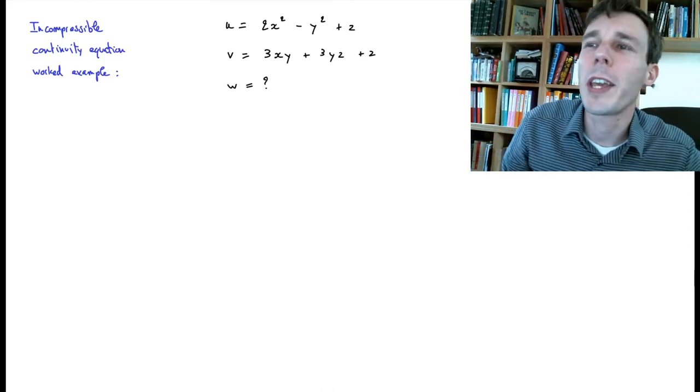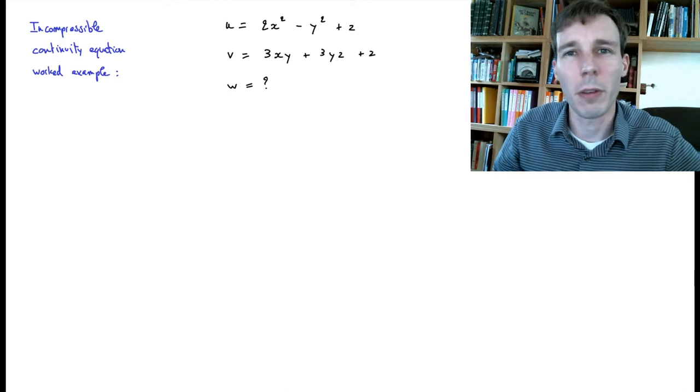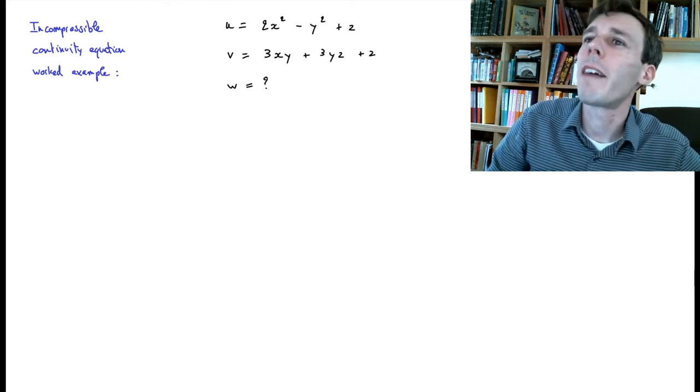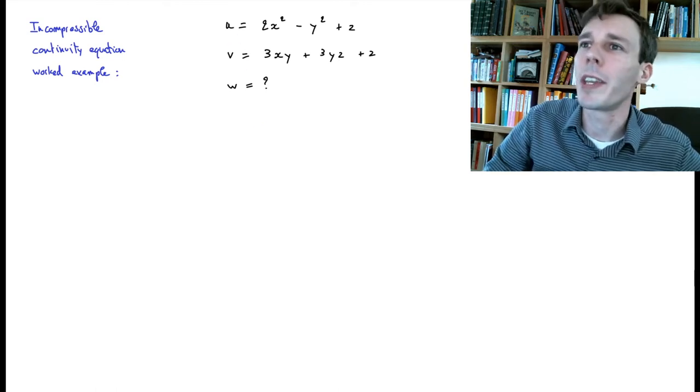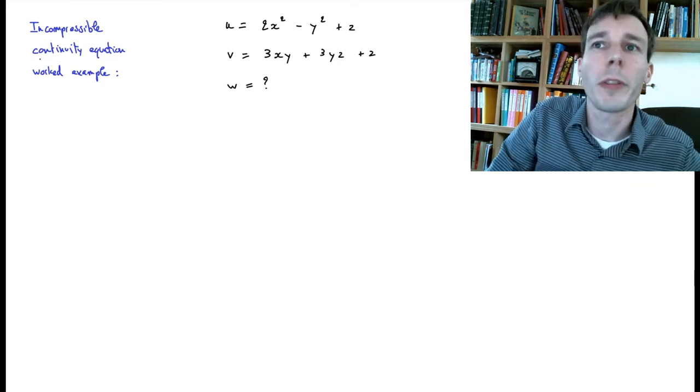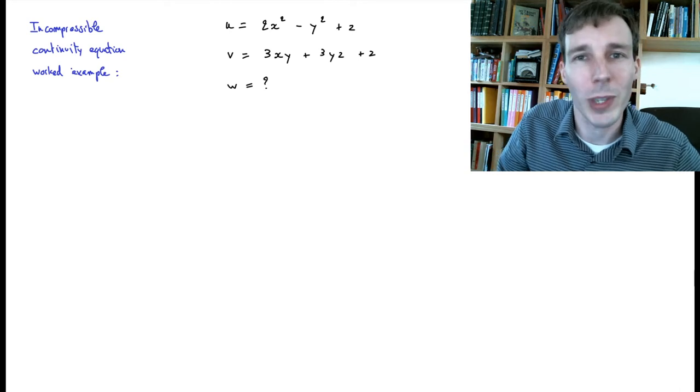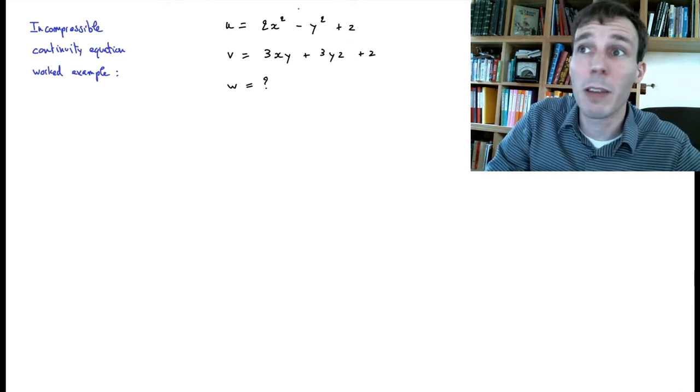In this problem we are looking at a very academic example to try to see what the continuity equation tells us and does not tell us about the flow. What we have is a fluid flow with three components u, v, and w, and we are given u and v and we are looking for w according to what the continuity equation or the mass balance equation tells us when the flow is incompressible.